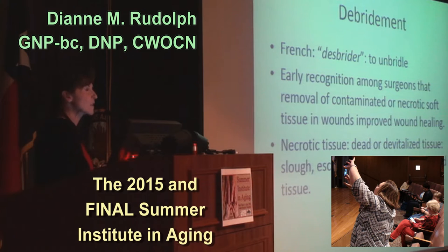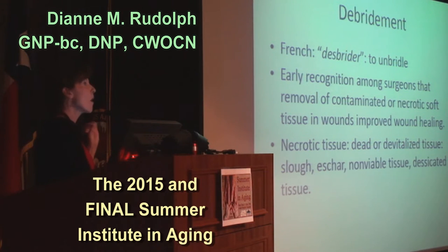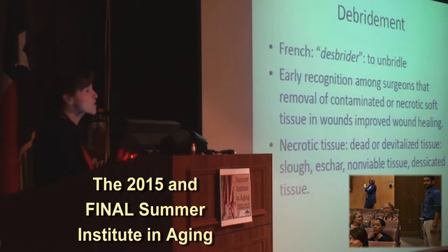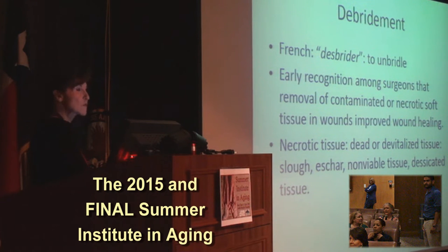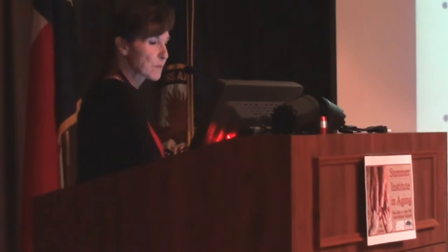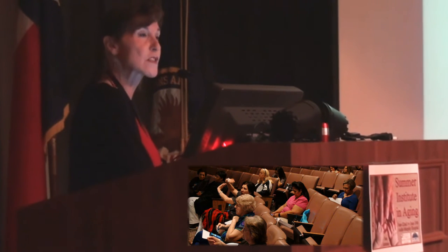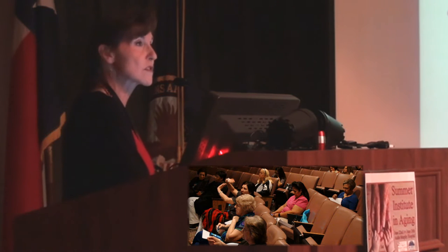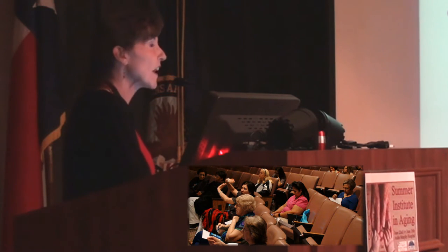Debridement — some say debridement, some say debridement, tomatoes or tomatoes — comes from the French word meaning to unbridle. The term originated on early battlefields when surgeons in France realized that successfully removing necrotic tissue from wound beds would facilitate healing and that wounds would actually do better. Essentially, debridement refers to any number of different methods to remove what we call necrotic tissue — a generic word for dead or devitalized tissue.